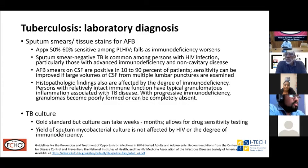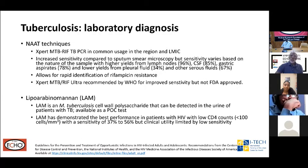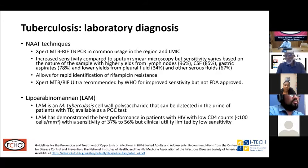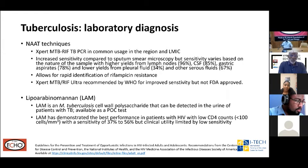TB culture is the gold standard for diagnosis but can take weeks to months. It allows for drug sensitivity testing, and the yield is not affected by HIV or degree of immunodeficiency. Nucleic acid amplification techniques — PCR — are now in common use in our region and low- and middle-income countries. PCR is more sensitive than sputum smear microscopy, with high yields from lymph nodes, CSF, and gastric aspirates, and lower yields from pleural fluid and other serosal fluids. It allows rapid identification of rifampicin resistance, increasingly important given the global spread of MDR and XDR tuberculosis.